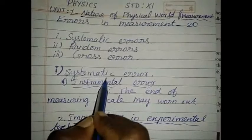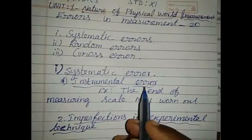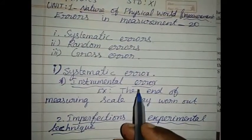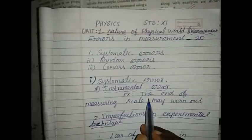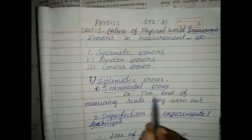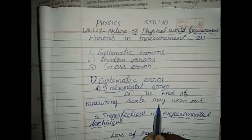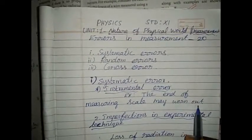First one, Systematic Error. This error occurs due to some limitation within the system. If someone using a measuring scale for long time, the end of measuring scale may worn out. Due to this, instrumental error occurs.